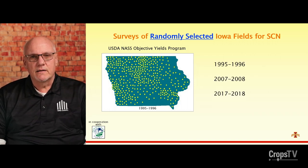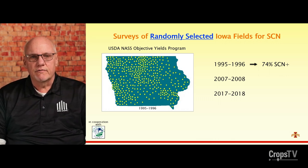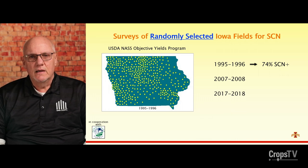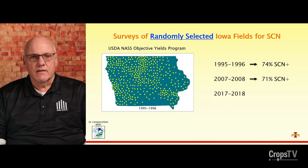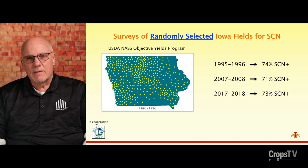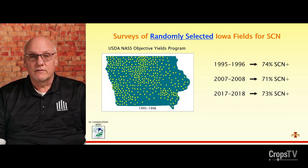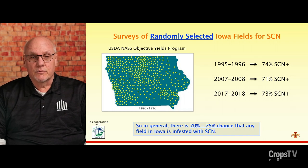I've done this three times over the last three decades: in the 90s, the 2000s, and the 2010s. The results were surprising. In the 90s, we found SCN in roughly 74% of randomly selected fields. About ten years later, it was in 71%, and ten years after that, 73%. Two things strike me: how consistent it is across three sampling periods, and that SCN is present in about three-fourths of the fields in Iowa.